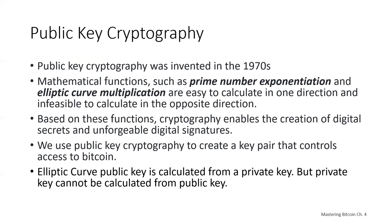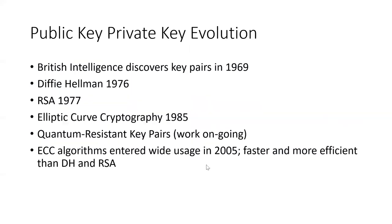Mathematical formulas like prime number exponents and elliptic curve multiplication are used in public key cryptography. One key feature of these formulas is that they are easy to calculate in one direction but extremely difficult to calculate in reverse. Using these functions, cryptography enables digital secrets and unforgeable digital signatures. For Ethereum and Bitcoin, we use elliptic curve cryptography to generate a public key from a private key — but not in reverse: knowing the public key, you cannot figure out the private key.